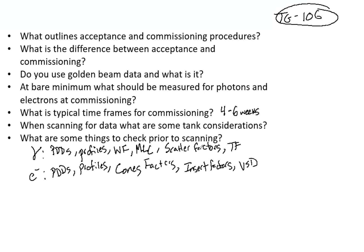For tank considerations when scanning for data, the tank needs to be at least 5 cm larger than your largest field size, and you'll want approximately a 75x75 cm cube tank. If your tank is too small, you won't achieve full scatter conditions, which will limit the accuracy of your results. You also want to use distilled water and watch for evaporation, which can happen overnight and throughout the day.